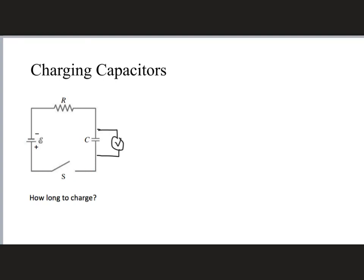What factors determine how long it takes for that process to occur? It's dependent on two things. First, the capacitance of the capacitor — a bigger capacitance means the capacitor can hold more charge, so it takes longer to fill up. Second, the resistance of the resistor — a bigger resistor impedes current flow, slowing down the charging process, so a bigger resistor also means a longer charging time.